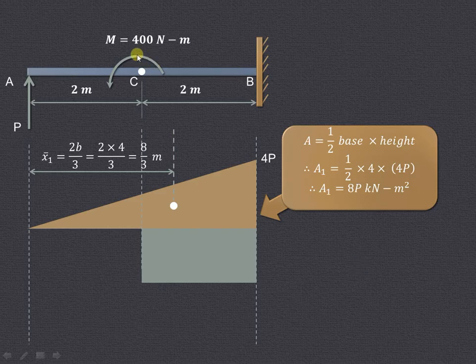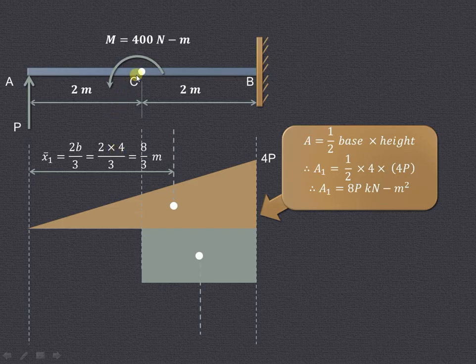Now let us consider this particular anticlockwise moment which is acting. As it is acting in the anticlockwise direction, that moment will be negative. The diagram that we have drawn shows that 400 Nm is remaining same throughout from C to B because there is no load or moment acting between C and B. So 400 Nm that is uniform, so we will get the rectangular distribution over here.